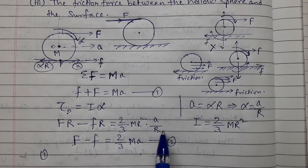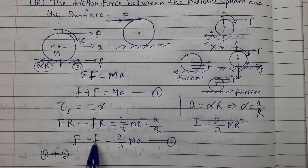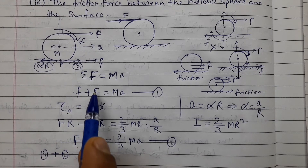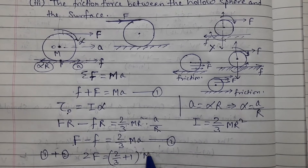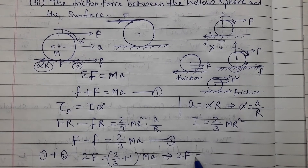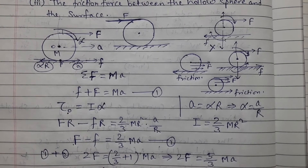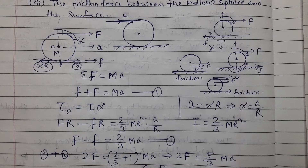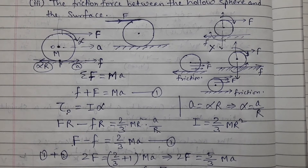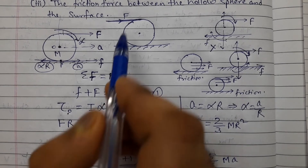Adding Equation 1 and Equation 2, the friction force terms cancel: 2F = (2/3 + 1)Ma = (5/3)Ma. So the acceleration a = 6/5 × F/M. This is the value of the linear acceleration — remember this: a = 6F/5M.